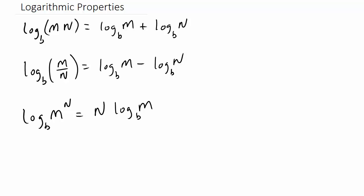In this video we're going to look at expanding logarithms. We'll be using these properties: the log of M times N with base B is equal to the log of M with base B plus the log of N with base B.